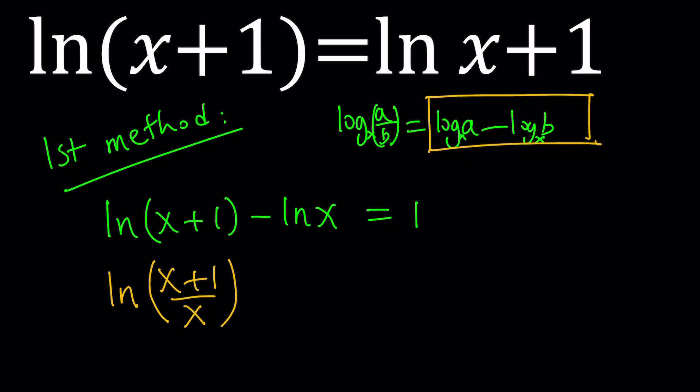And obviously, this changes the domain of the original equation, because in the original equation we do need x+1 to be greater than 0 and x to be greater than 0, right? At the same time, in the second case, we do need (x+1)/x to be positive. That doesn't mean that they both have to be positive. They can both be negative as well. This can be negative, this can be negative, and the quotient would still be positive and good for the second one.